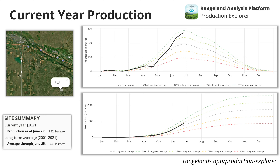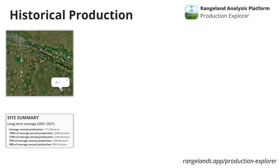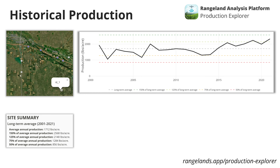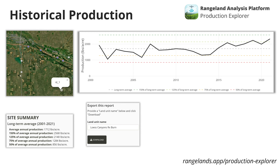You can also look at historical production, which gives you a much better understanding of what an average year, a good year, and a poor year look like. When we plot this out, we can see how much production occurred between 2001 and 2021 relative to long-term average lines, and we can see the variability from year to year. In a poor year there's maybe 1,200 pounds per acre; in a good year, maybe 2,300 pounds per acre. This helps you bound your understanding using 35 years of satellite data.